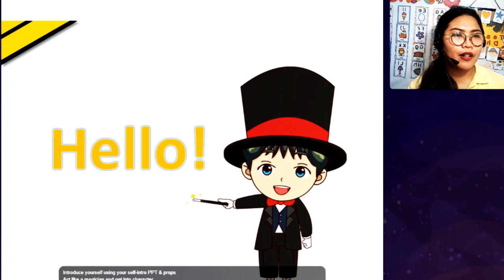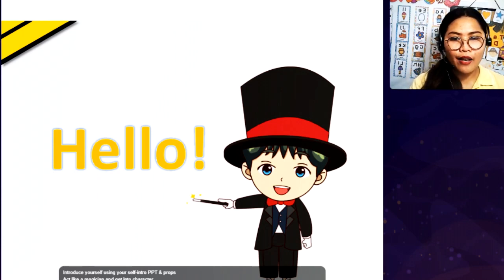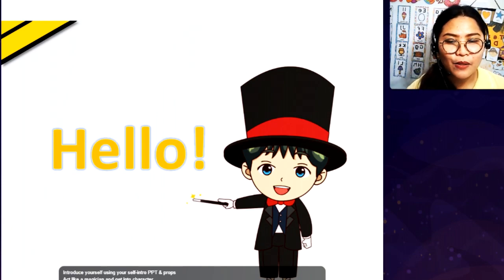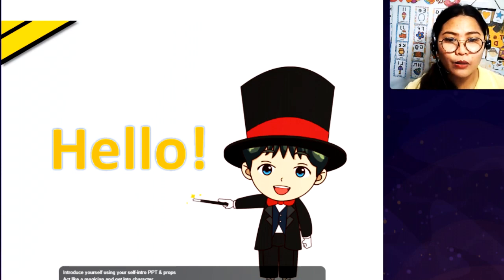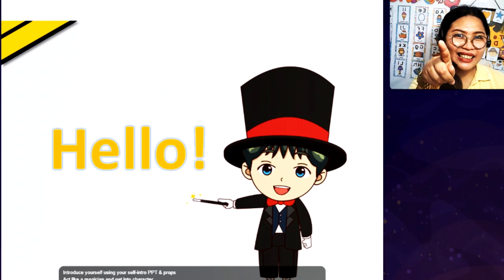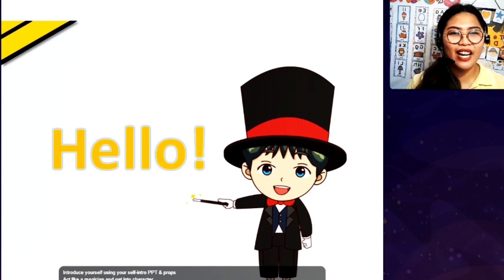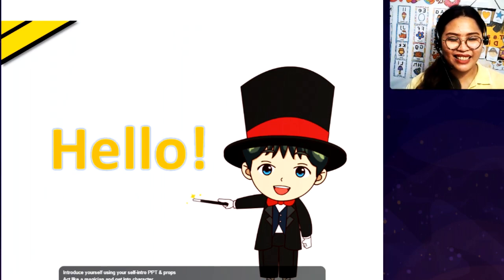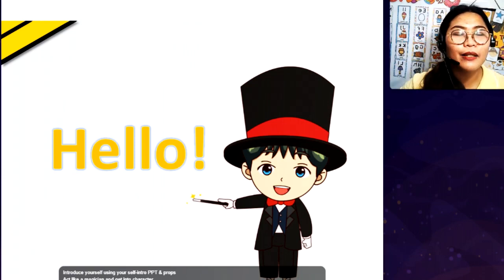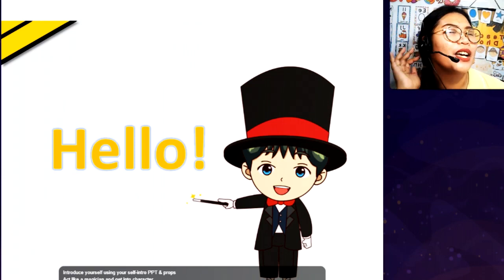Then afterwards, what I did is — since we have here the magician — I said, "There is a magician, and the magician will say hello." "Hello, Allie. How do you say?" Very good. "Hello, teacher." Okay, very well. Now, can you repeat? "Hello, Allie."